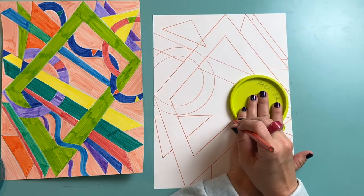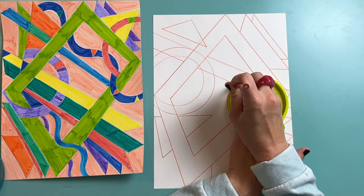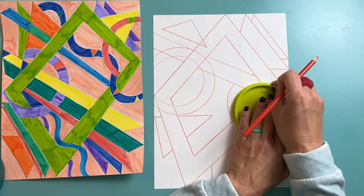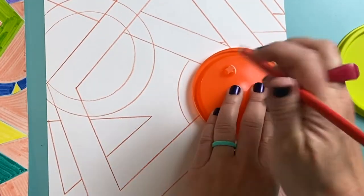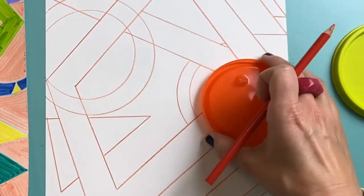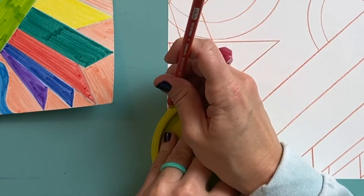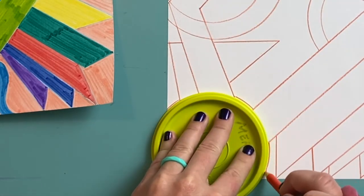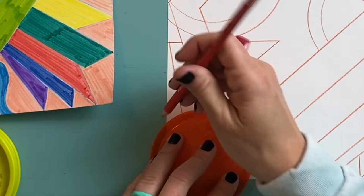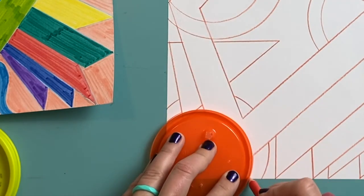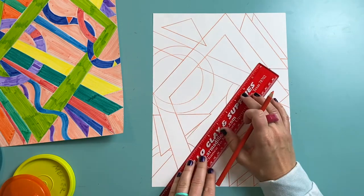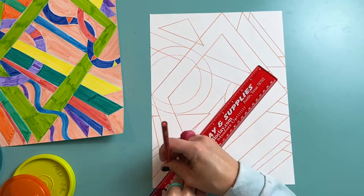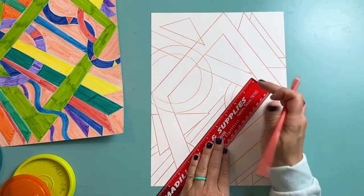I might even stop and start at certain points to make it look like it's really overlapping. I'm going to add some more of these dynamic diagonal lines through the background. They'll give my artwork a lot of energy.